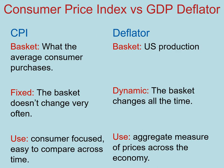Now that you know how to build the price index, let's talk about two of the most widely used price indices: the consumer price index, or CPI, and the GDP deflator. Let's talk about what is in their respective baskets. In the CPI, we have everything that an average US consumer would purchase. In the deflator, we have the entirety of US production in goods and services. For that reason, you'll find some differences between them.